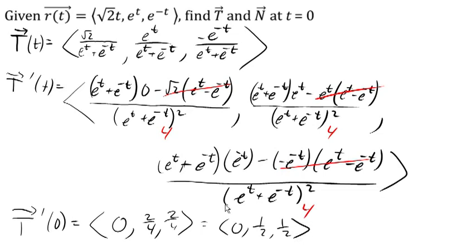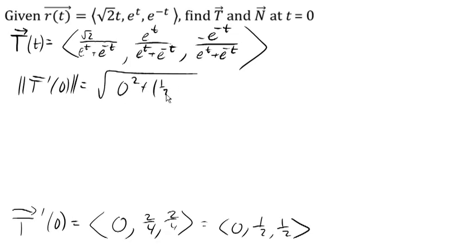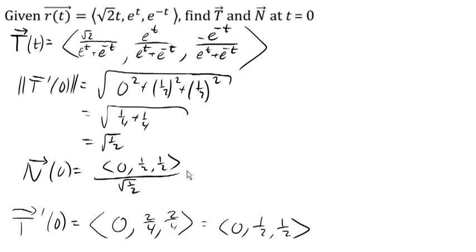Now we need the magnitude of T prime at 0, which is the square root of 0 squared plus one half squared plus one half squared. That gives us one quarter plus one quarter equals one half, so the magnitude is the square root of one half. Our unit normal vector at 0 is then T prime at 0 divided by this magnitude: (0, one half, one half) all divided by root one half, giving the vector (0, root one half, root one half). Combined with our earlier result, we now have both the unit tangent vector T(0) and the unit normal vector N(0).